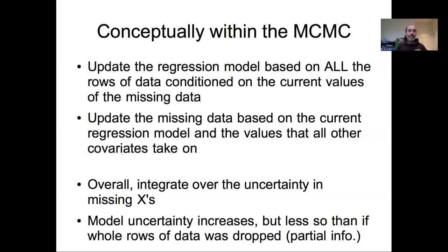Even if you have an observed y and a missing x in a univariate model, the missing data model also tells us about how we invert problems. If we had the problem where we observed some y's and wanted to infer the x's associated with those y's, that is exactly identical to this missing data model.